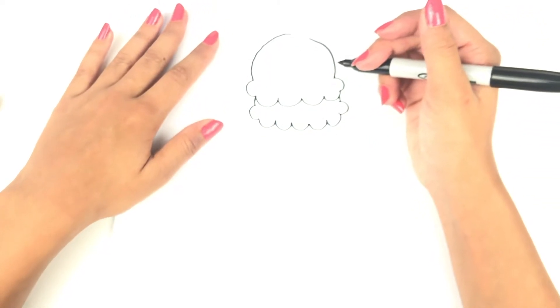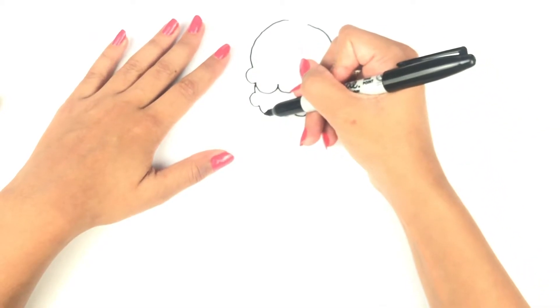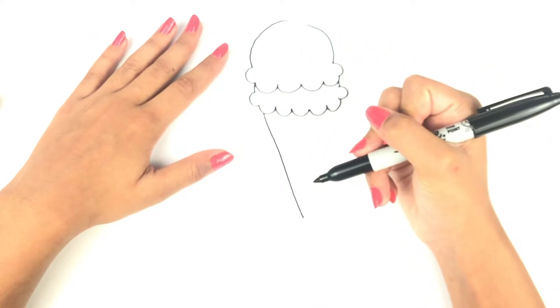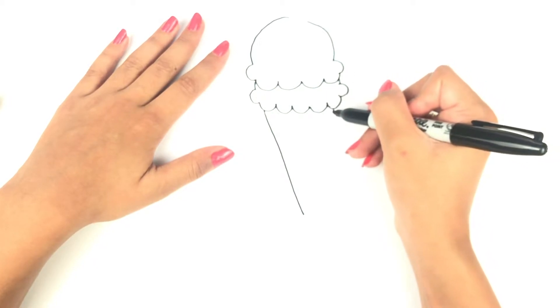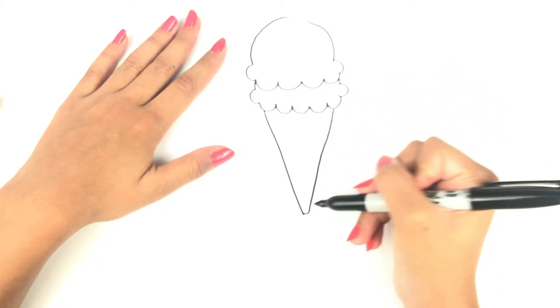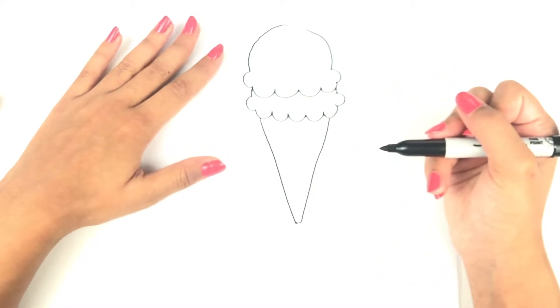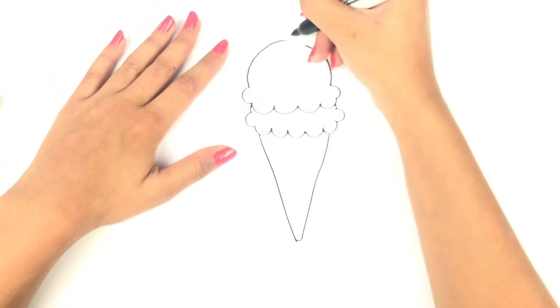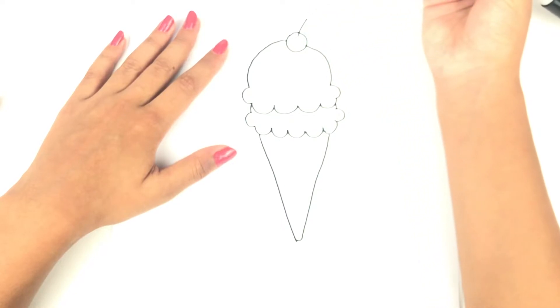Right after, we are going to do an upside down triangle with a rounded edge. Then to upscale our ice cream, we're going to add a cherry on the top with some chocolate drizzle.